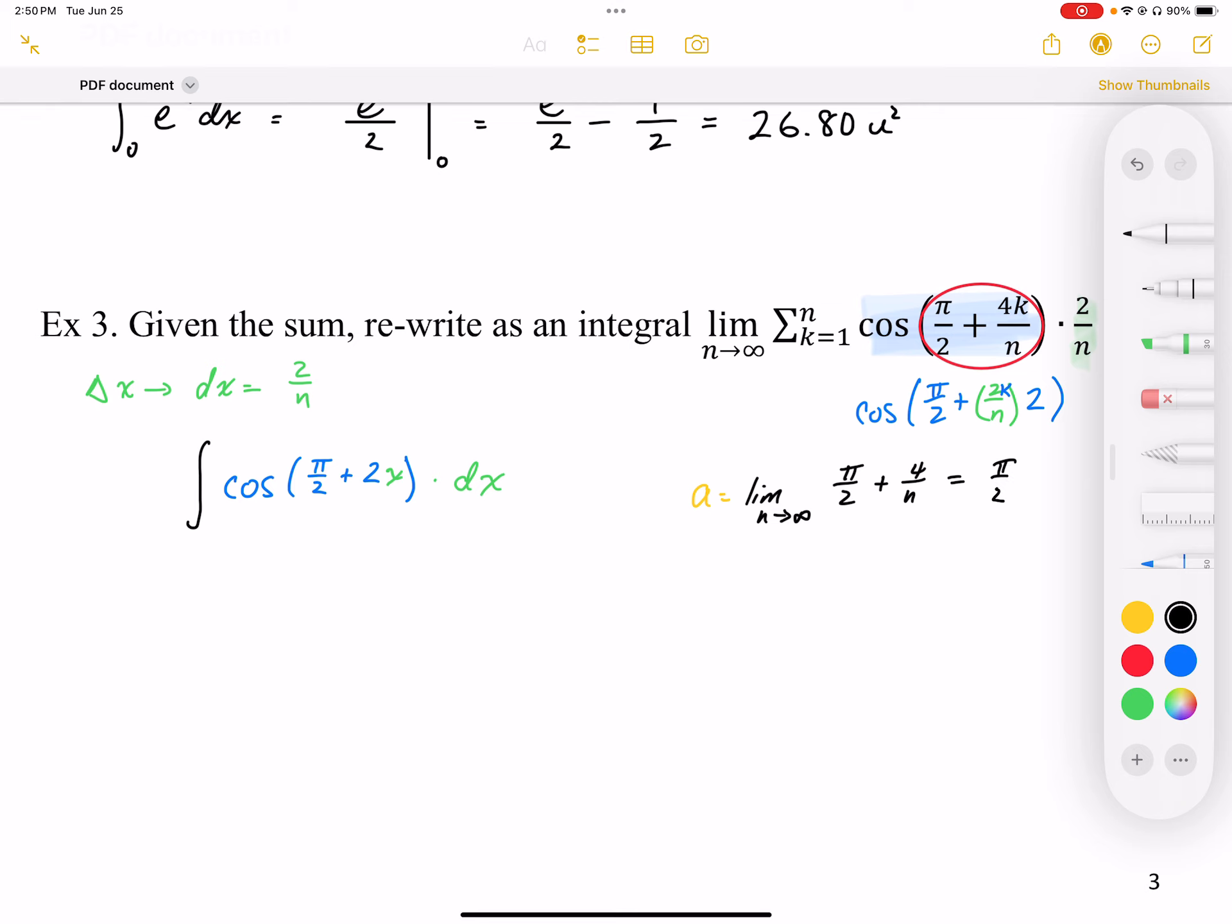And working this out, this works out to be pi over 2. So my starting value, my lower bound, is going to be pi over 2.